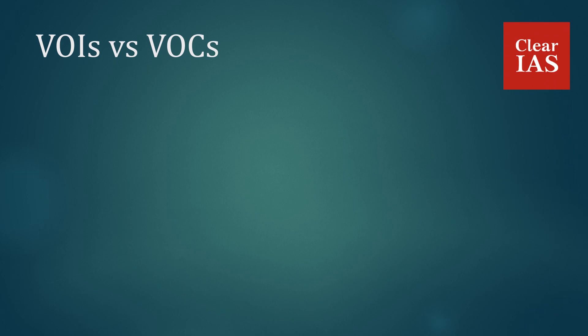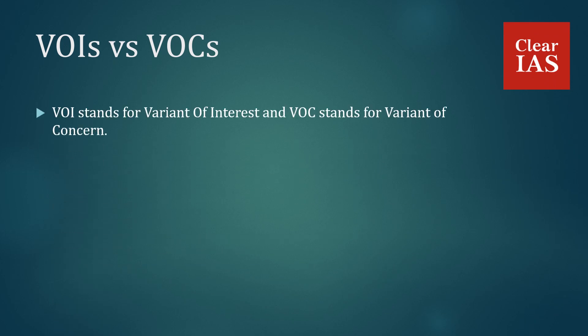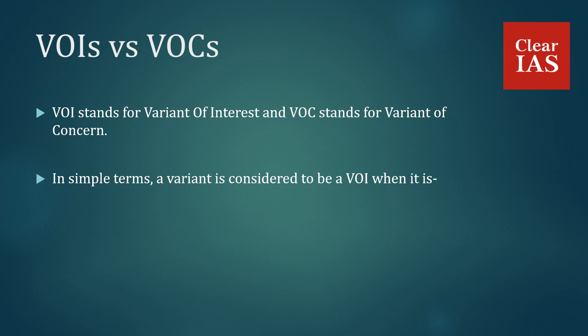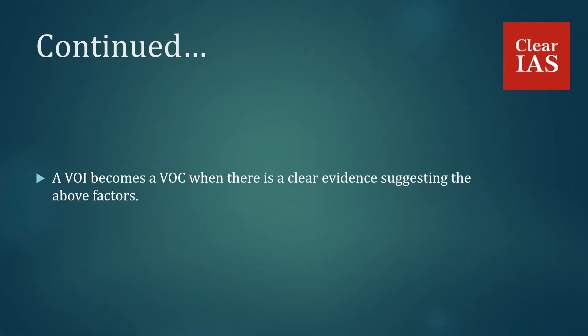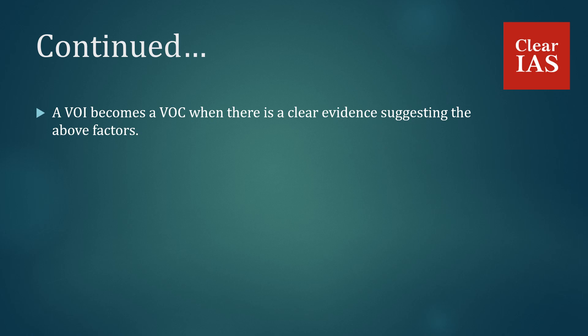VOIs vs VOCs. VOI stands for Variant of Interest and VOC stands for Variant of Concern. In simple terms, a variant is considered to be a VOI when it is suspected to be more contagious, with the ability to cause severe disease and with the ability to escape the effectiveness of vaccines. A VOI becomes a VOC when there is clear evidence suggesting the above factors.